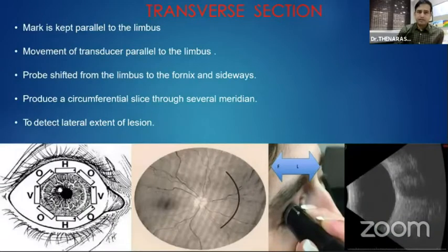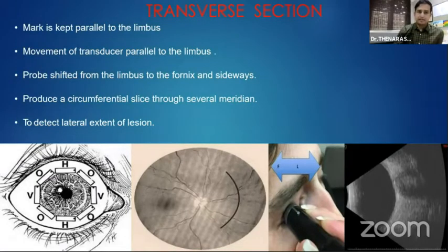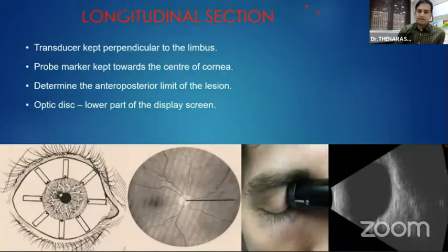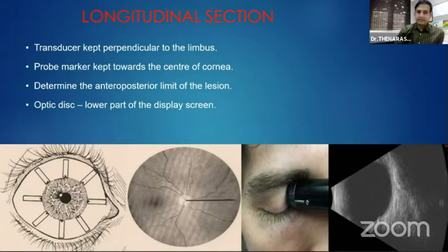In the probes we can have three different sections. In the transverse section, the transducer is kept parallel to the limbus and the marker is also kept parallel to the limbus; it helps in detecting the lateral extension of the lesion. In the longitudinal section, the transducer is kept perpendicular to the limbus and the probe is always towards the center of the cornea; it helps in detecting the anterior-posterior limit of the lesion, and the optic disc will always be inferior to the macula in this section.